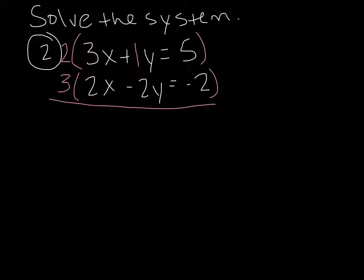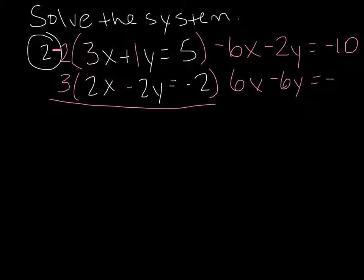Now the only problem is one of them has to be negative. It doesn't matter which one, just one of them. So I'm going to make this top one a negative 2. So every single thing on top gets multiplied by negative 2. Negative 2 times 3x is negative 6x. Negative 2 times y is negative 2y. Negative 2 times 5 is negative 10. On the bottom, every single thing gets multiplied by 3. So 3 times 2x is 6x. 3 times negative 2y is negative 6y. And 3 times negative 2 is negative 6.